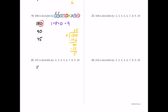For number 20, we have 147. It ends in an odd number, so 2, 4, 8, 6, and 10 all fail. The digit sum 1 plus 4 plus 7 is 12, a multiple of 3 but not 9. The last digit is 7, not 5 or 0, so 5 fails. For 7: dividing 147 by 7 gives 21 with no remainder, so 7 works. 147 divided by 7 is 21.